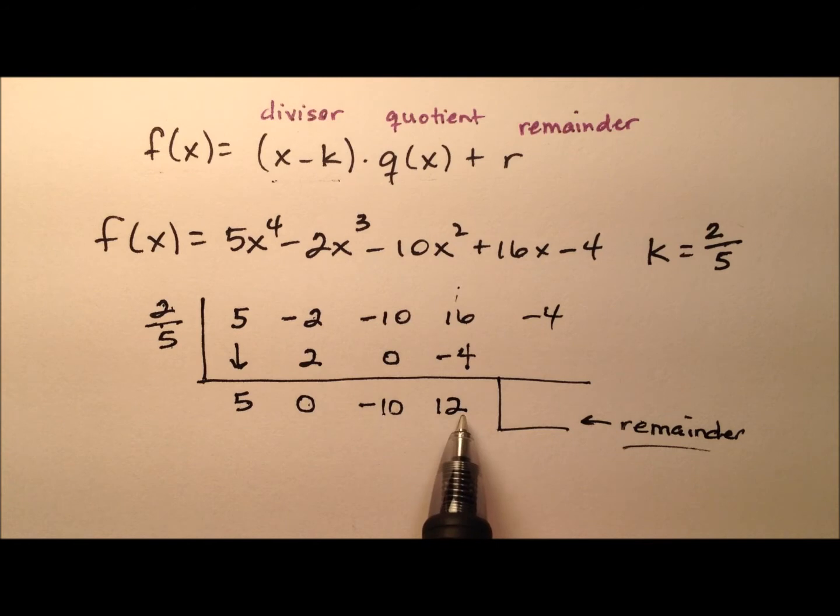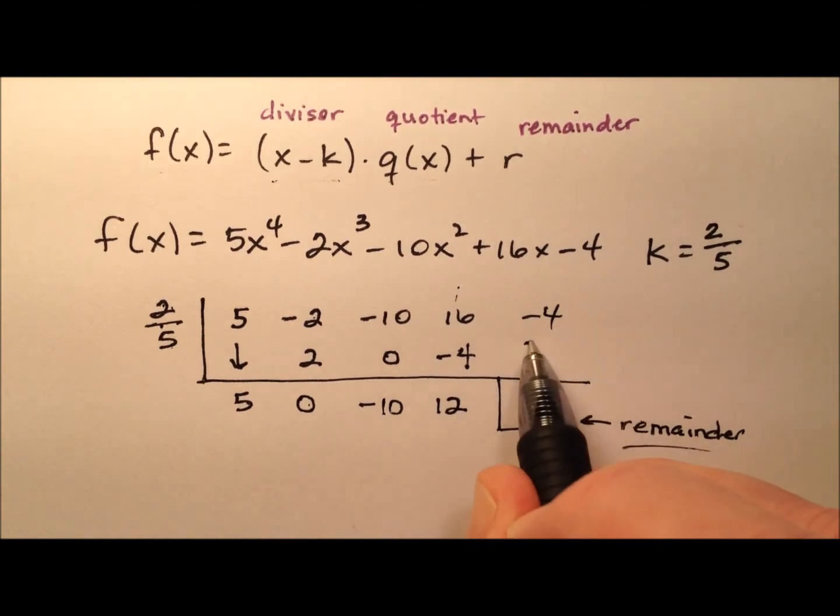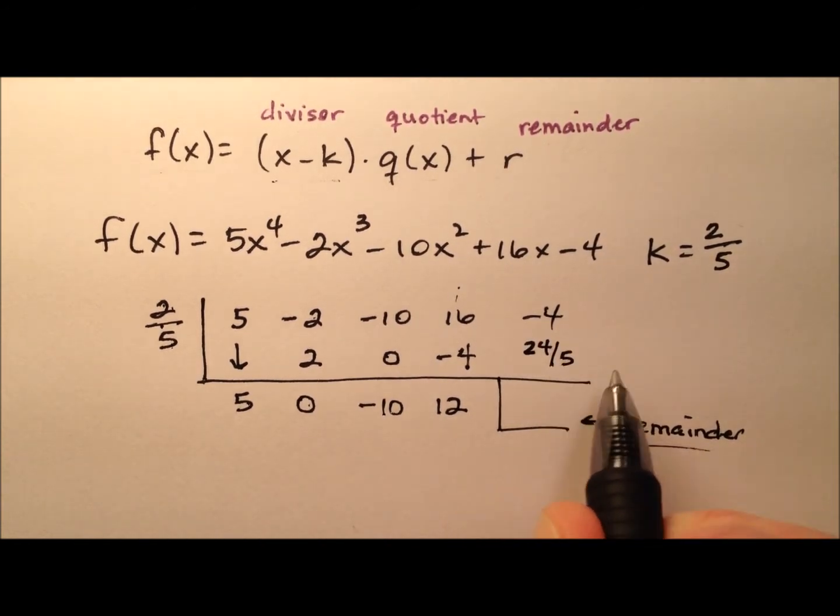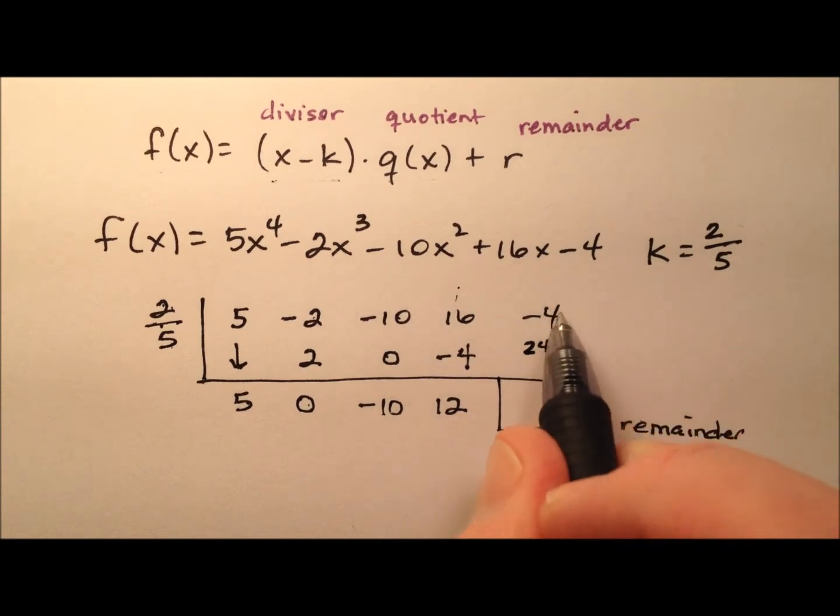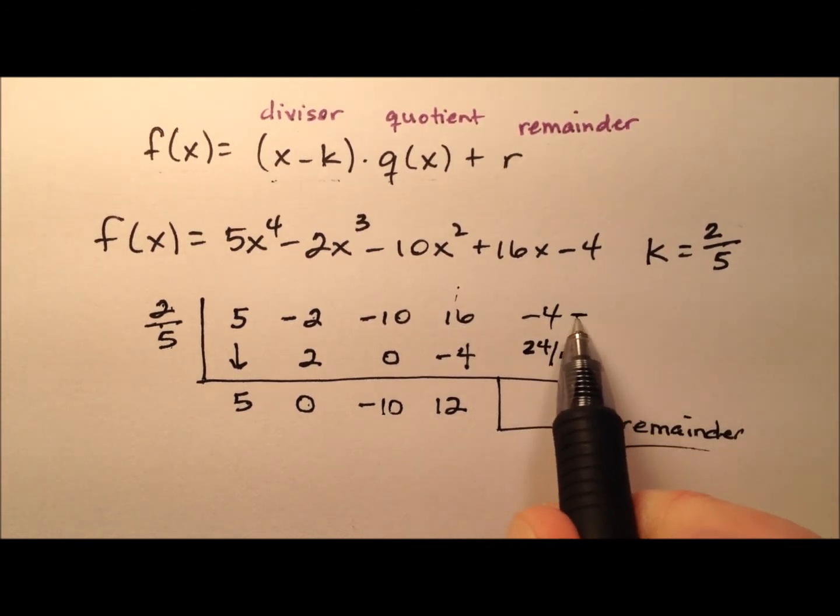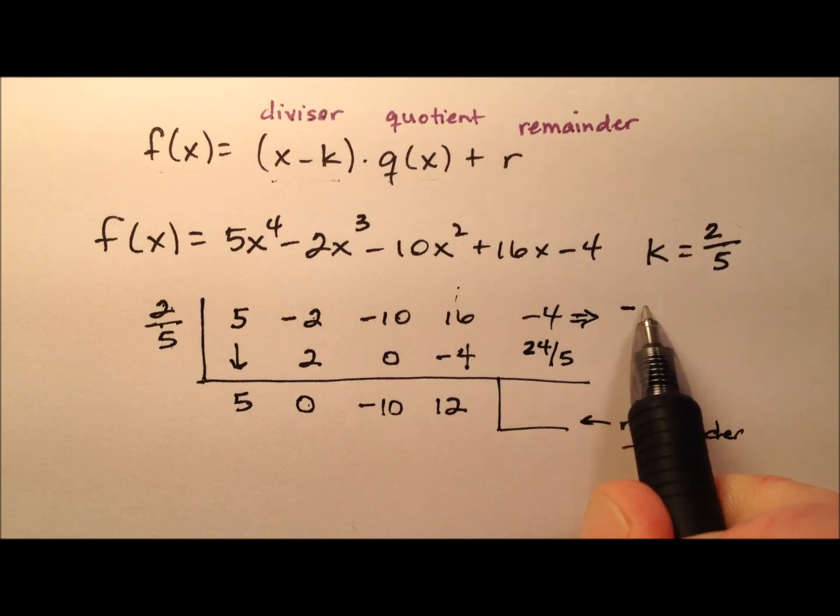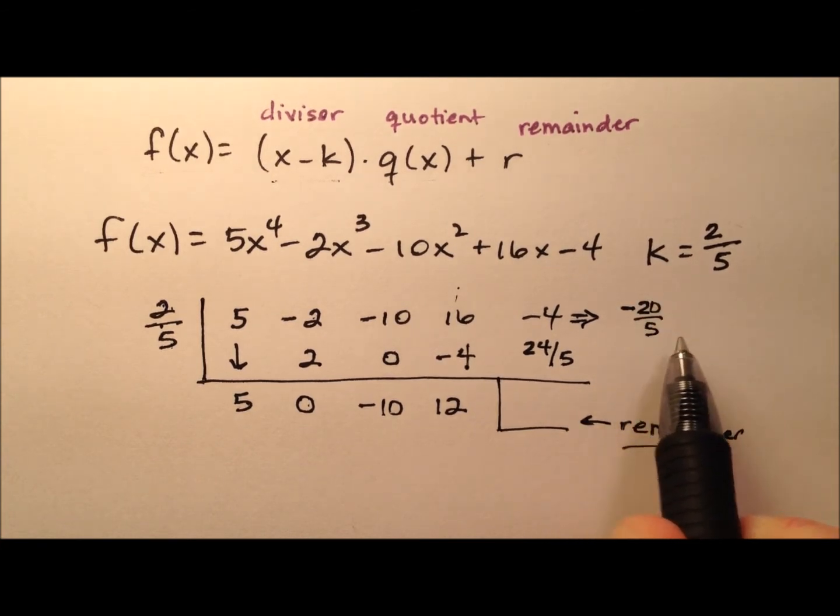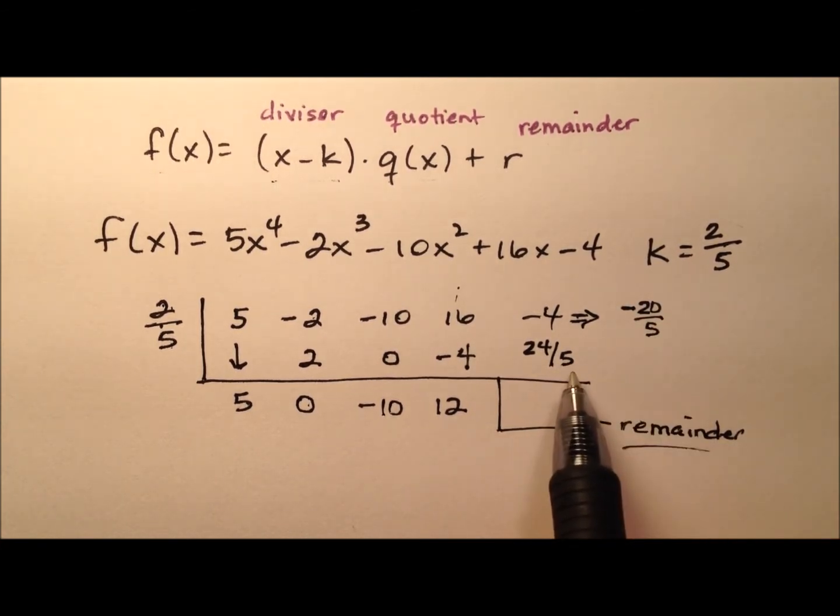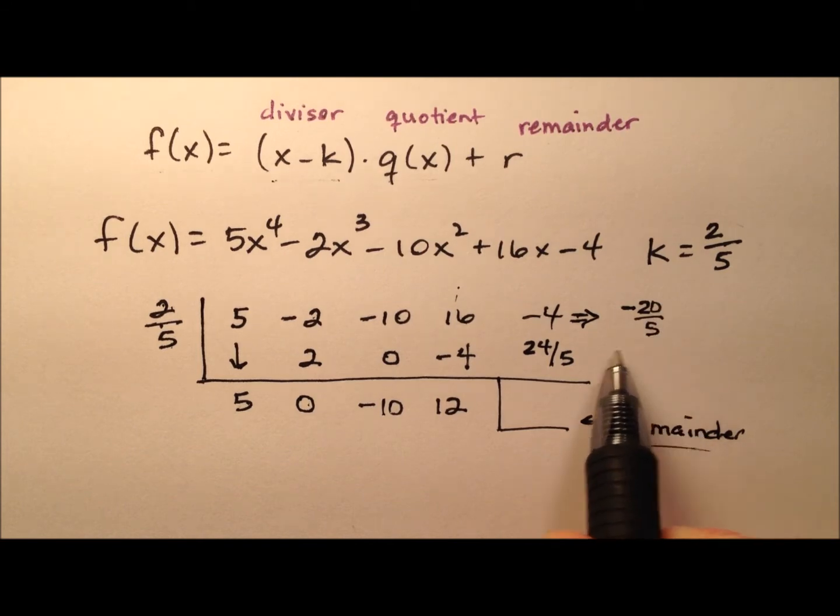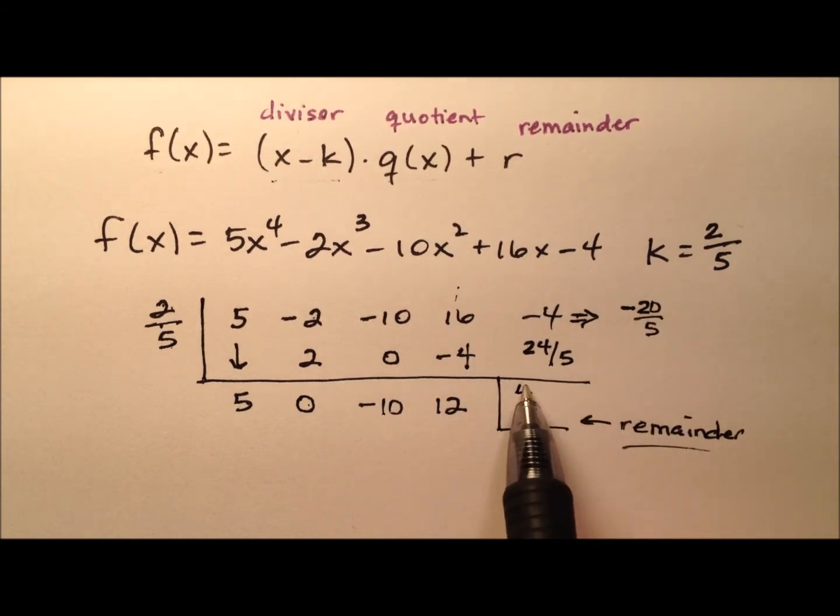And then 2/5 times 12, well, that looks like 24/5. So I'll write that there. And I need to add this. Well, this is a whole number, this -4. So I could rewrite it as -20/5, and that would give me the common denominators. So -20/5 plus 24/5 will be 4/5. And that's that remainder there.